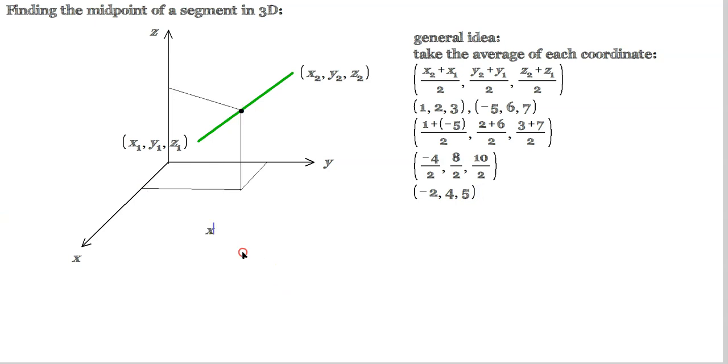You might label these as x sub m. That means the x-coordinate of the midpoint. You might label the other one there as y sub m. That simply means the y-coordinate of the midpoint. That's why the m is present. And the last one there, we could label, for example, as z sub m, which just means the z-coordinate of the midpoint. And that's how you think about this kind of question.